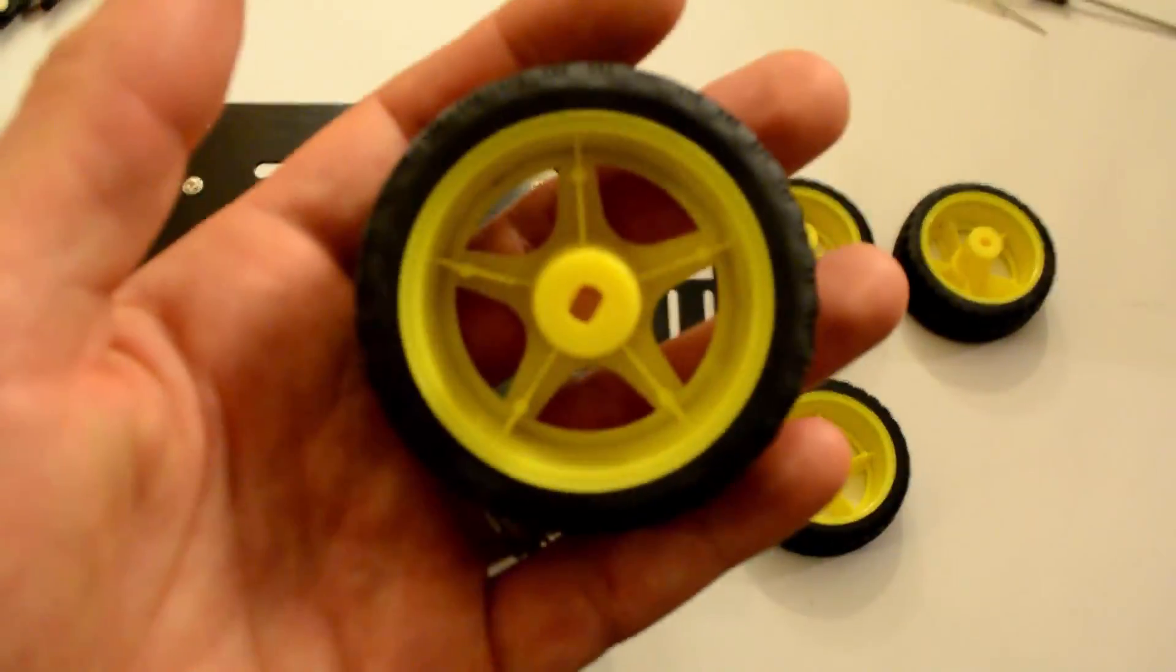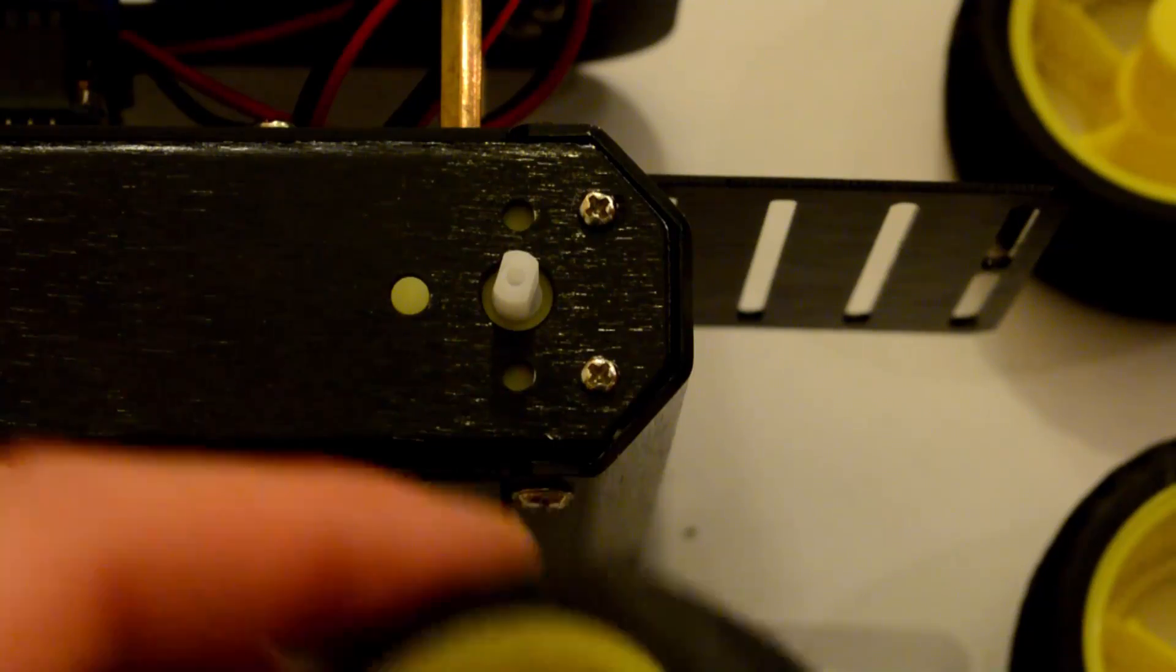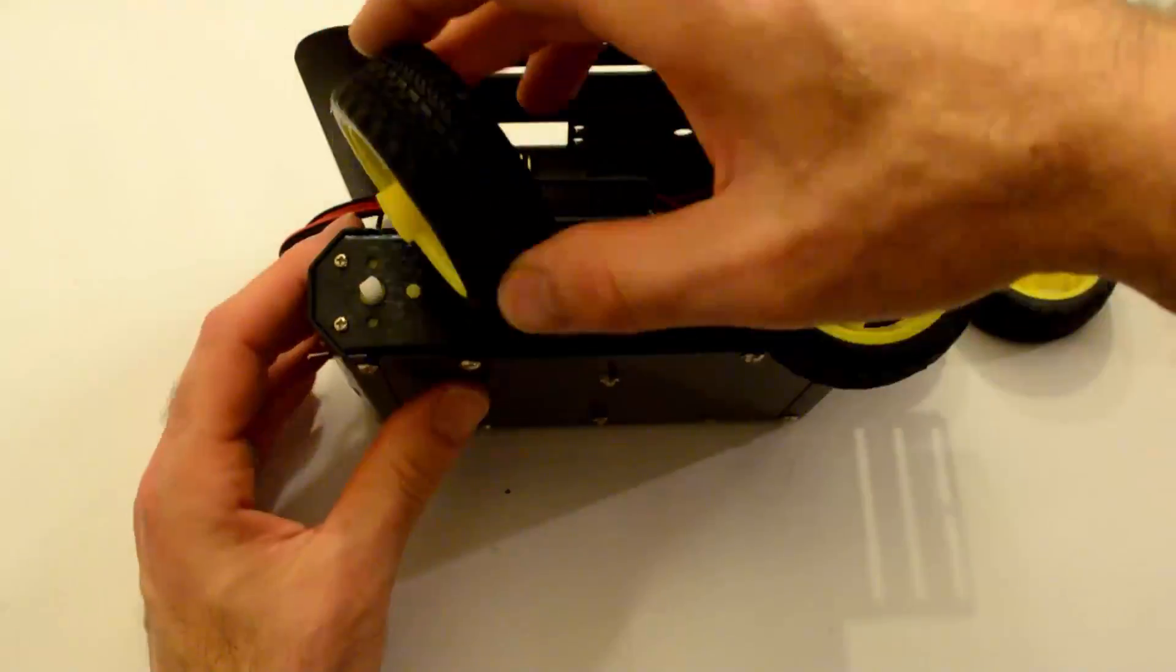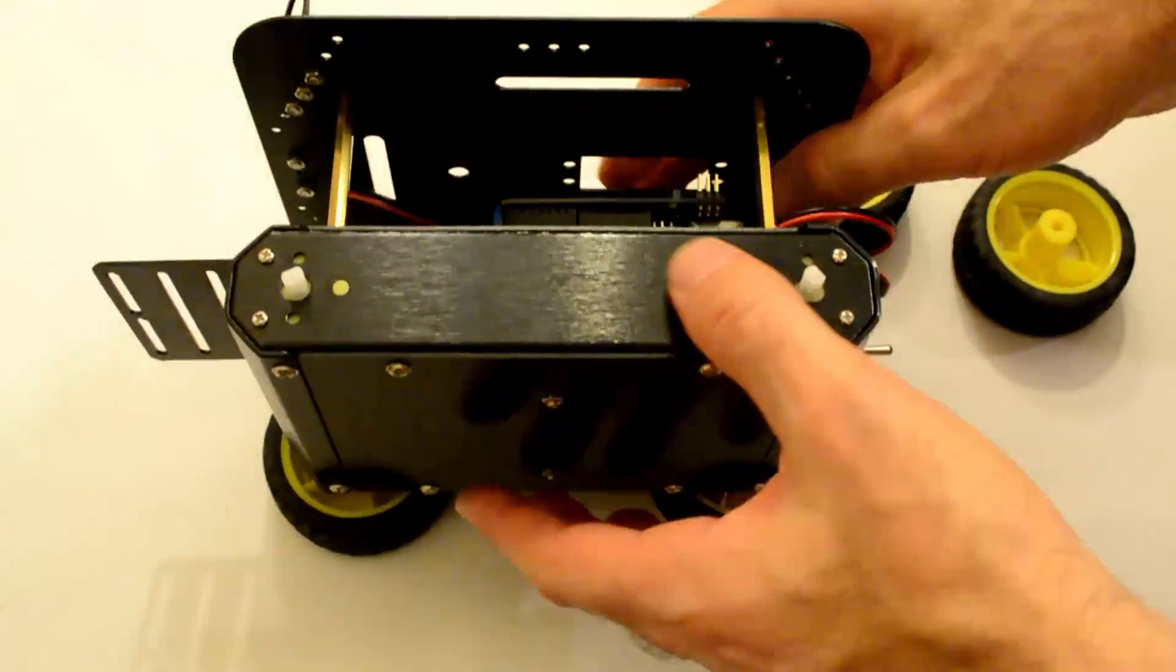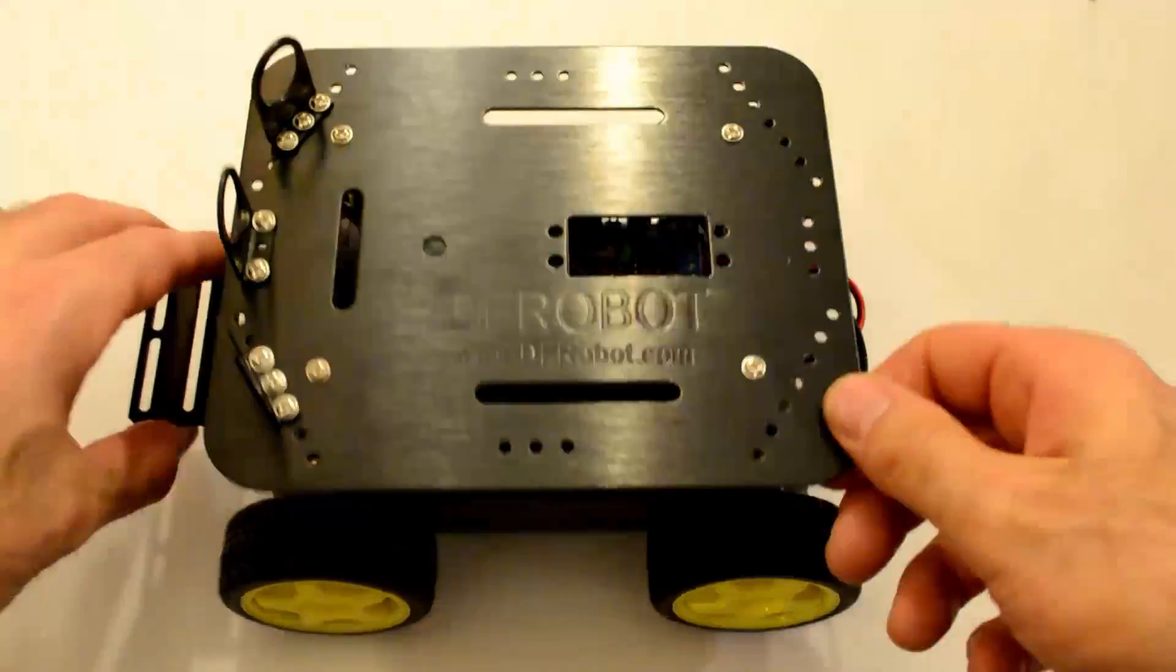So now finally we get to put on the stinking wheels. So the wheels mount with a compression fit on the motor axles and you have to line up the motor axle. It's kind of rectangular. You line it up with the slot on the wheel and then you have to give it a little more pressure than you might think and the wheel kind of just pops on.